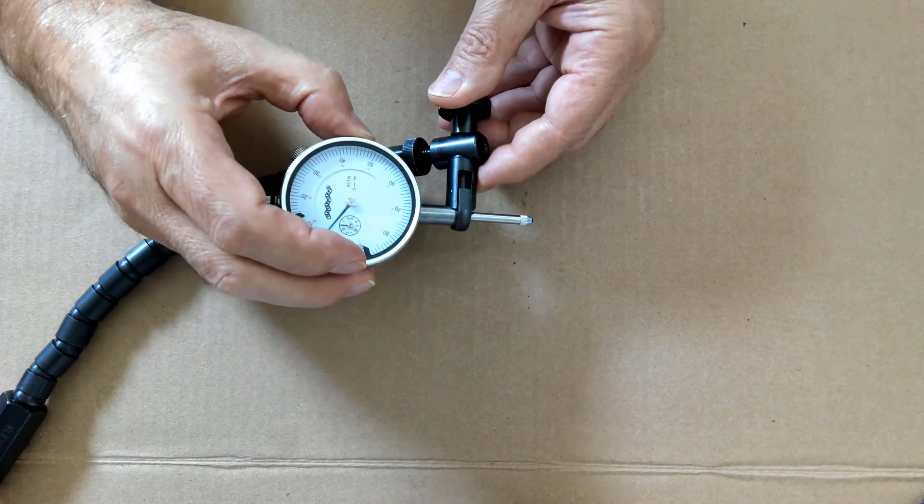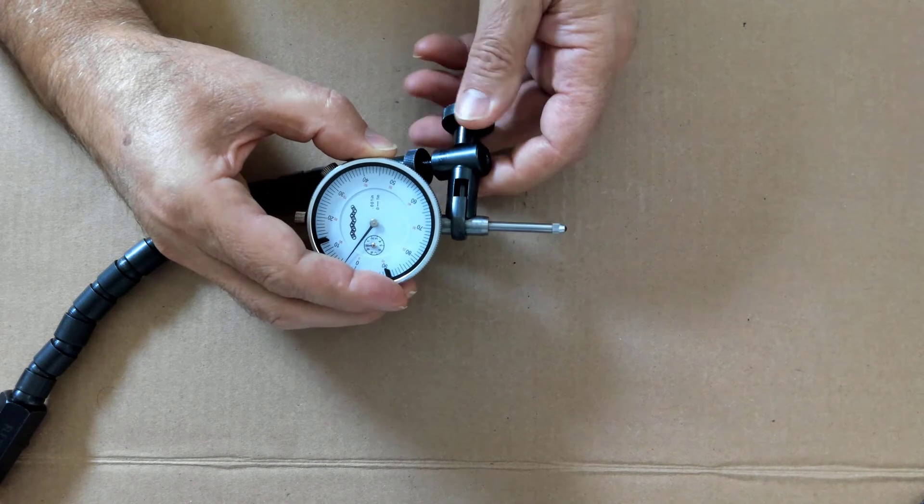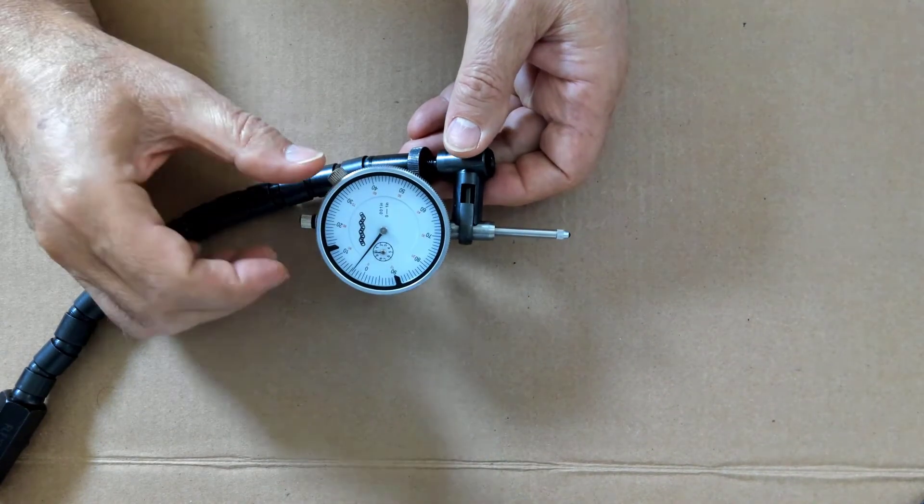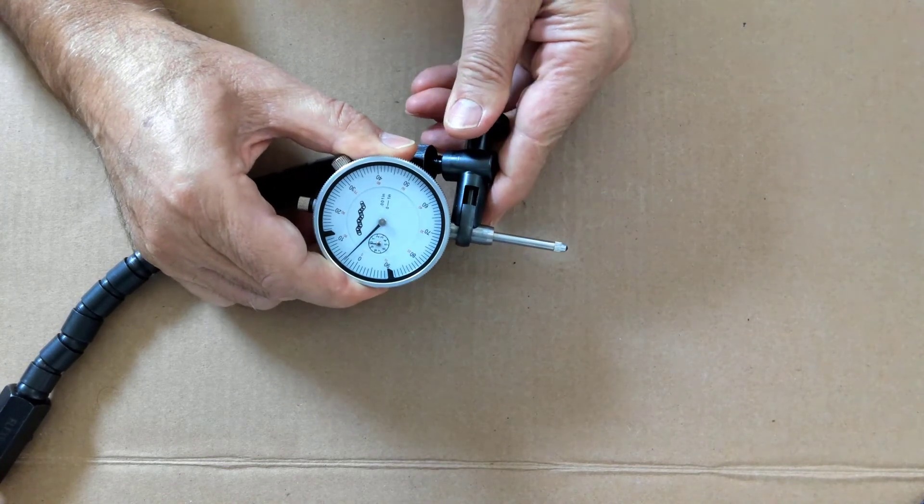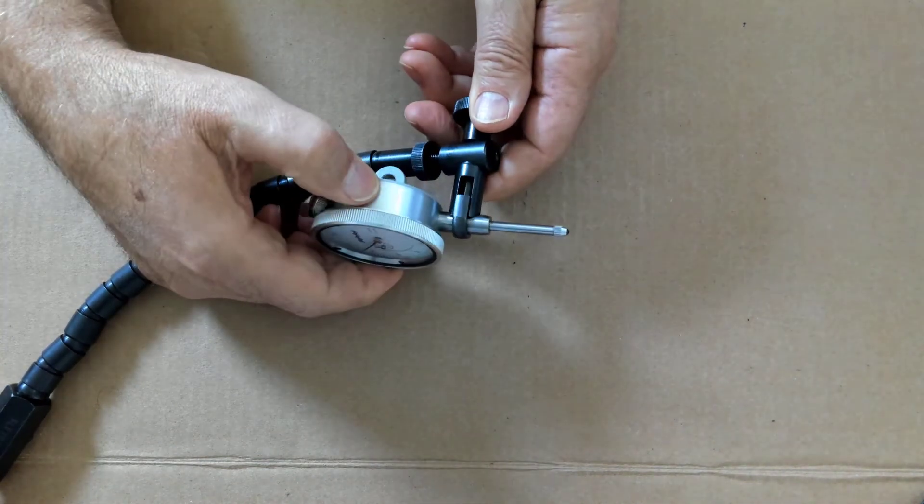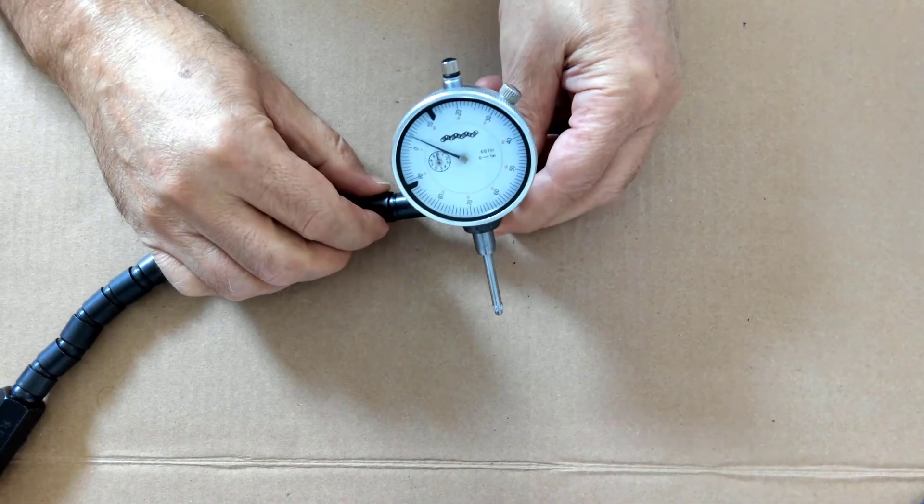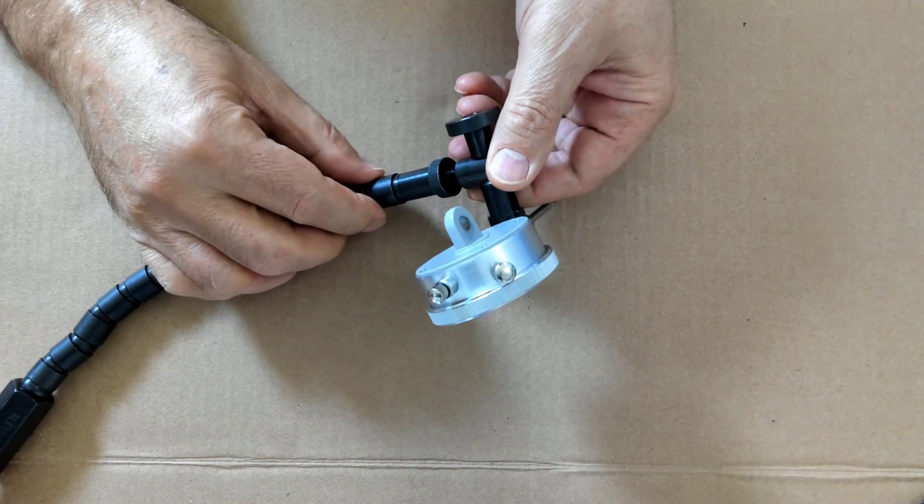Simply slide the dial indicator through the clamping mechanism and tighten the thumb screw. That will hold the dial indicator into place. If you want to reposition it, you simply loosen the thumb screw and you can twist the dial indicator or move it into a new position. And then you just simply clamp it down again for it to stay.